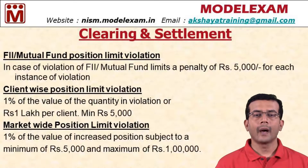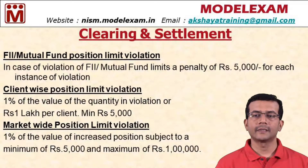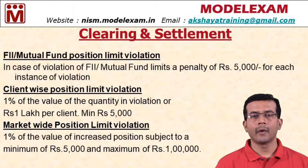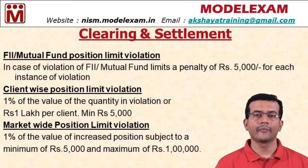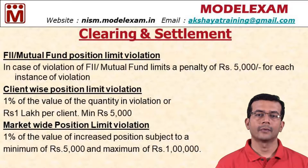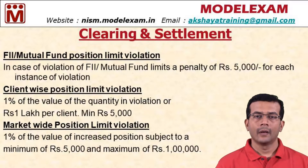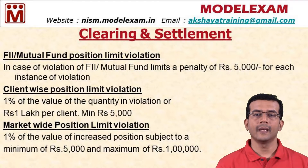The third one is market-wide position limit violation. That will be one percentage of the value of the increased position, subject to a minimum of five thousand and a maximum of one lakh. This is applicable whenever there is a market-wide position limit violation. For example, suppose a stock is banned and a trader was unaware of that and took a new position — then this penalty is applicable. These are all the violation penalties for limit violations.